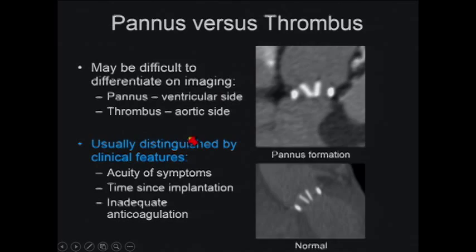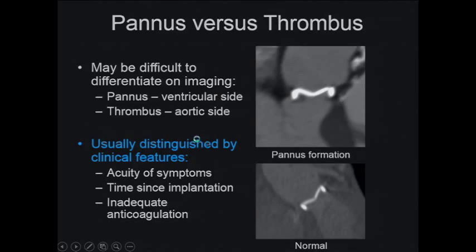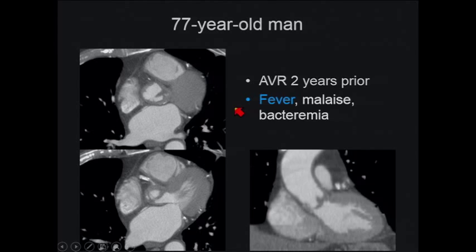Moving to another case: a bioprosthetic aortic valve placed two years prior, with the patient presenting with fever. We again see leaflet thickening, but this time it's eccentric and asymmetric — between the right and left coronary cusps. There may be a nodule on the ventricular side, though this may be just more leaflet thickening. Either way, this is endocarditis until proven otherwise.